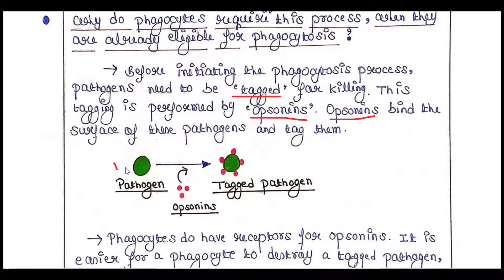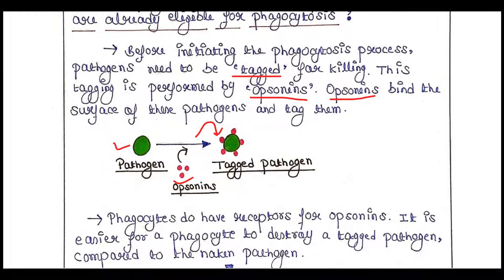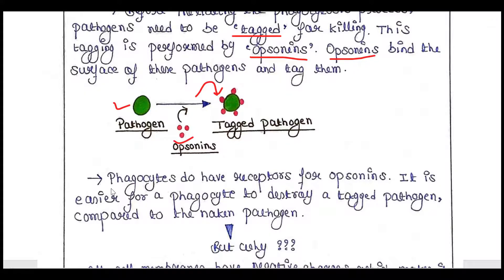In this picture, we can see that the pathogen is being coated by opsonins — these proteins bind and tag the pathogen. Phagocytic cells have receptors for opsonins, and it is easier for a phagocyte to destroy a tagged pathogen compared to a naked pathogen.